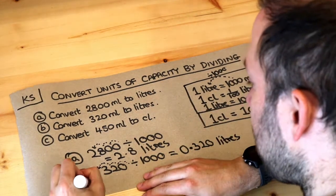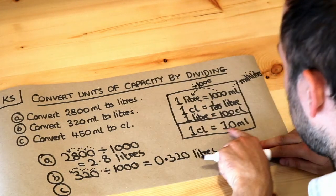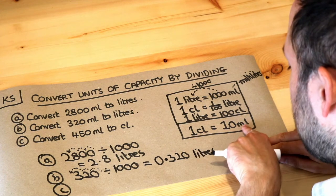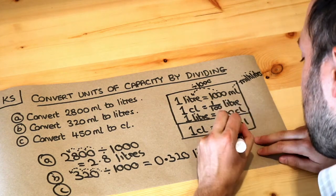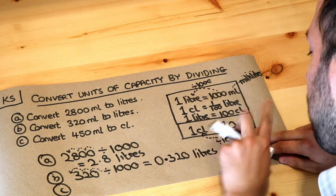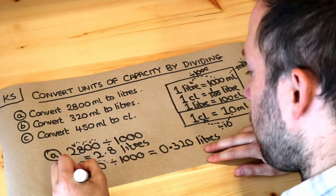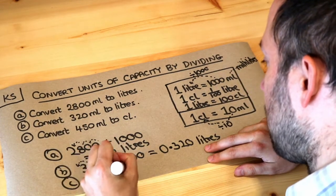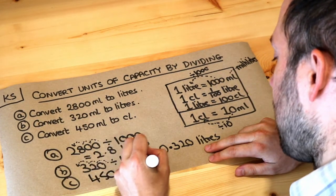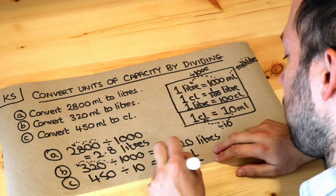And C, convert 450 millilitres to centilitres. Now let's see this bottom one here. To go from millilitres to centilitres, can you see that that number is getting 10 times smaller to get from millilitres to centilitres. So we just need to do 450 divided by 10, and that gives you 45 centilitres. That's the final answer.